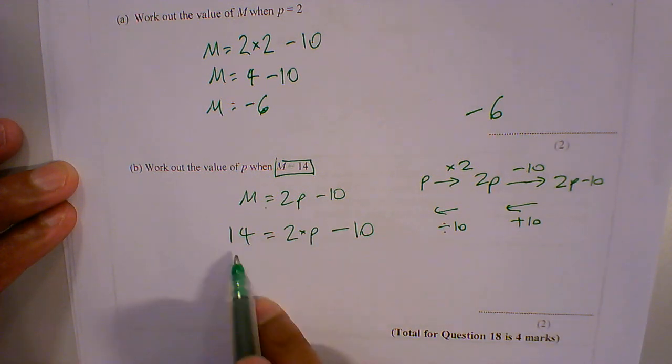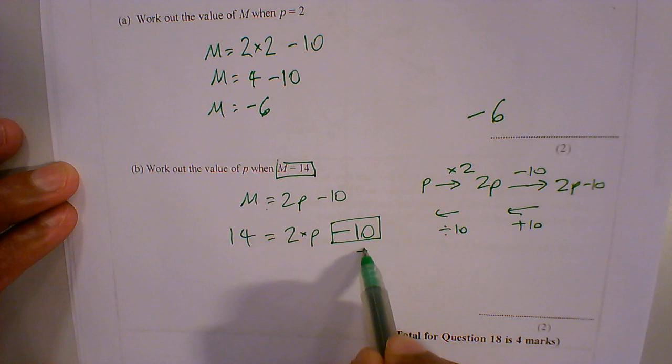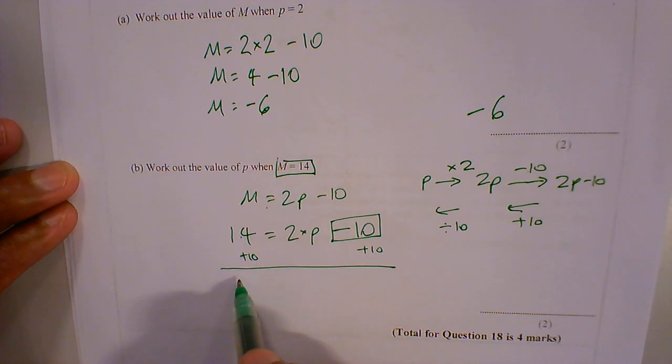So here if we look at this, we're going to be removing the negative 10 first. So it's plus 10 on both sides. 14 plus 10 is 24.